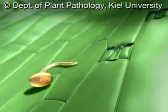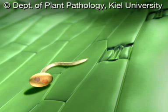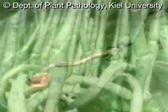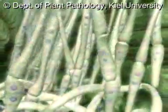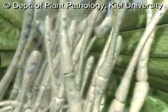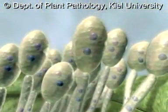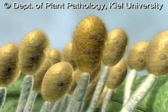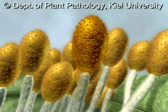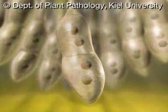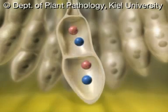This is where the dicaryotic aeciospore germinates. The infection leads to the development of dicaryotic mycelium, from which in turn dicaryotic uredinia spores and, later on in the year, teliospores originate.